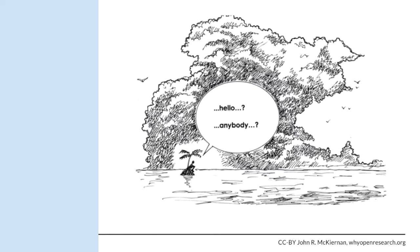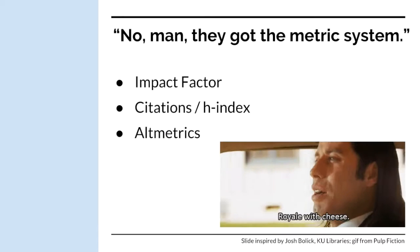Perhaps you published an article or recently submitted your thesis or dissertation, which is an exciting achievement. But how do you know anyone is out there reading your research? It can be hard to know your work is visible and being read. The primary ways that research impact is measured are with metric systems: the impact factor, citations, and the H index. In the last few years, we have seen growth in another way of measuring impact with alt metrics.